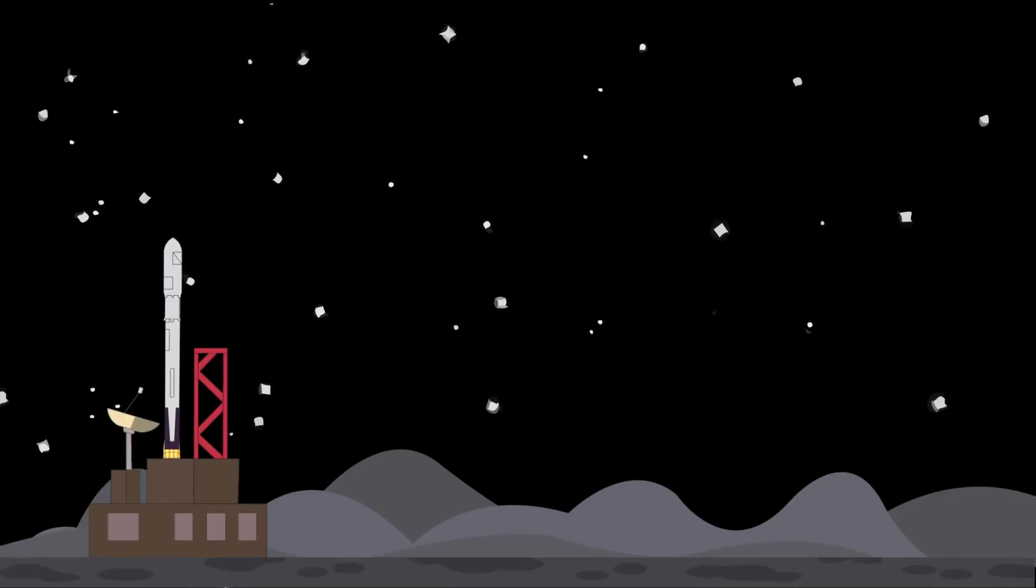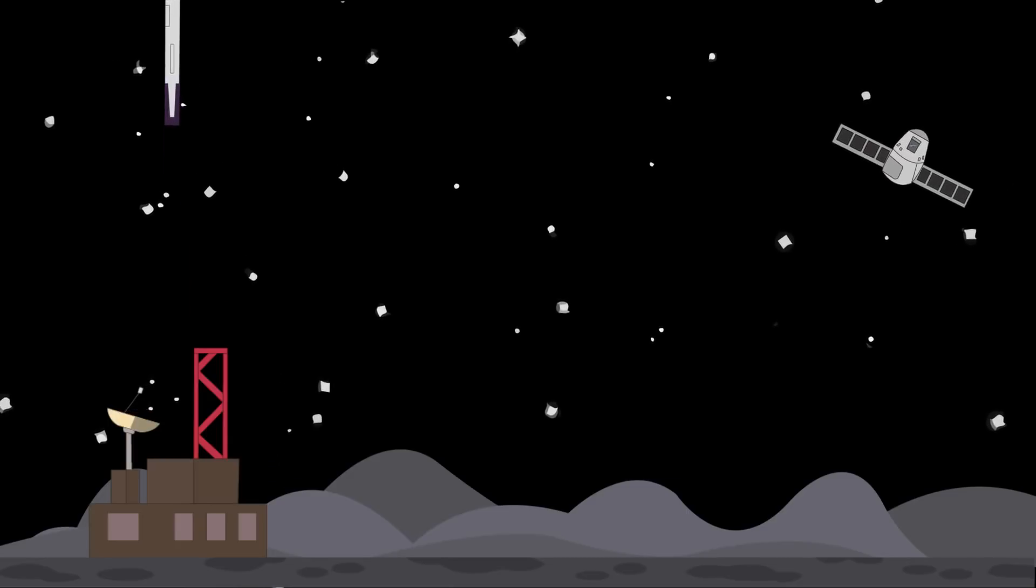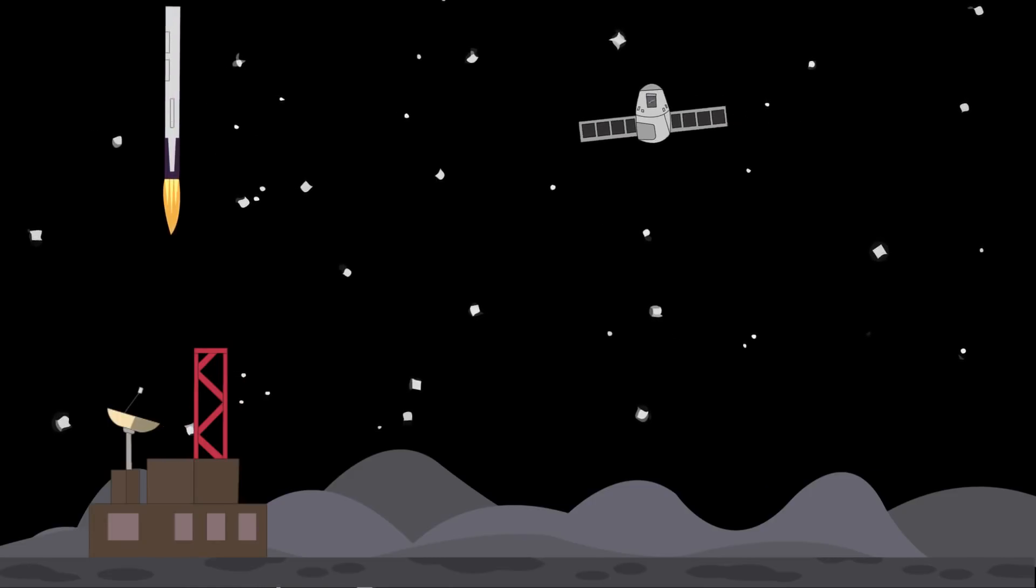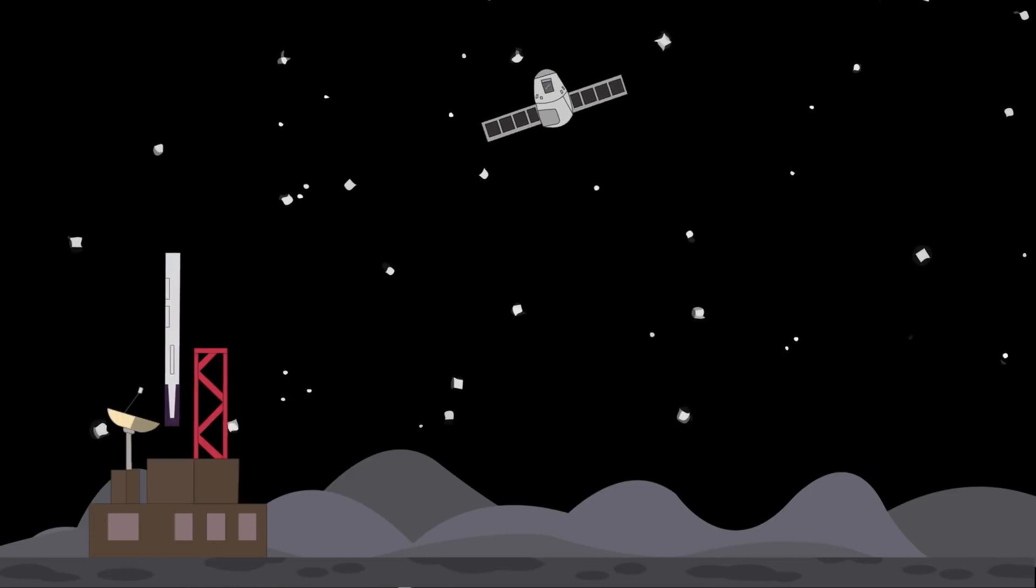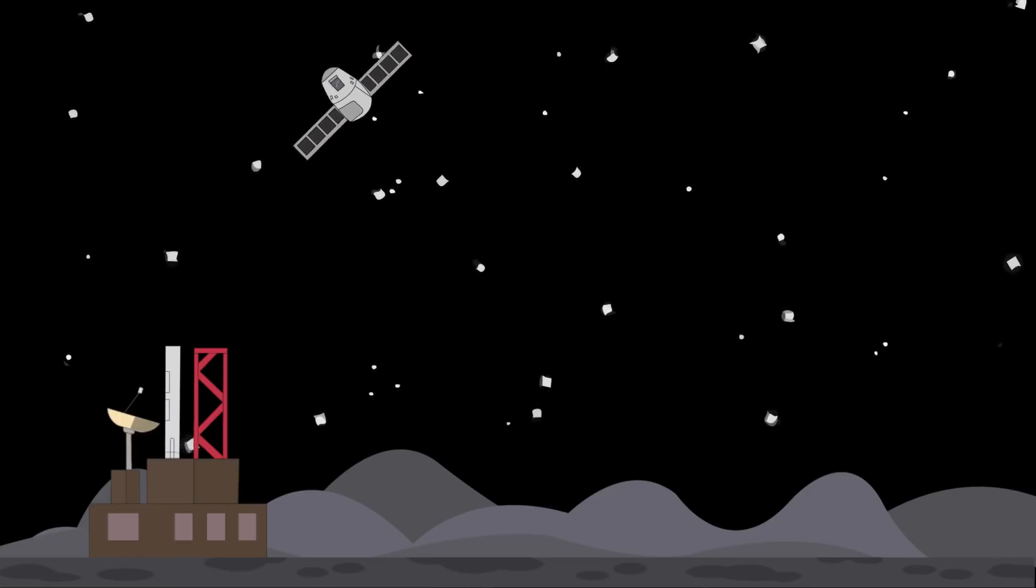A Moon base could serve as a launching platform or fueling station for future missions and would be way cheaper than launching them from Earth. Rockets would take less fuel to launch due to a decreased gravitational pull, as the Moon's gravity is one-sixth that of Earth. It would also provide a unique environment for scientific research and experiments.